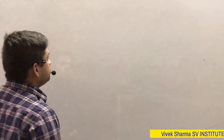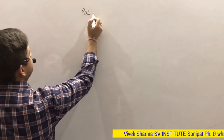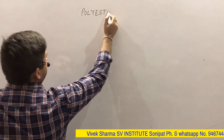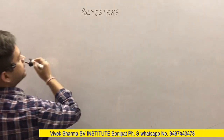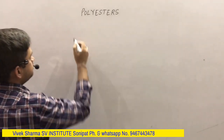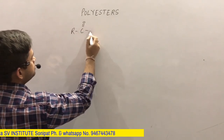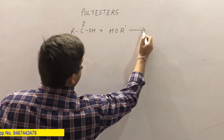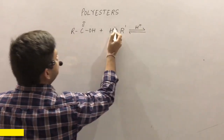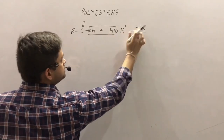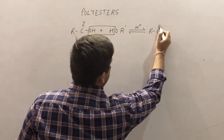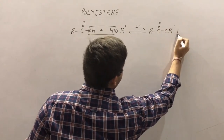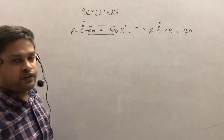Hello students. Till now we have discussed plastics, rubbers and polyamides. The next category of polymers is polyesters. Esters are formed by condensation reaction of a carboxylic acid, RCOOH, and an alcohol, R-OH, with elimination of a water molecule in acidic medium. It leads to formation of an ester. This reaction is known as esterification reaction.